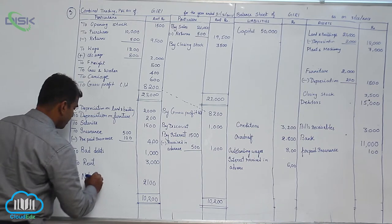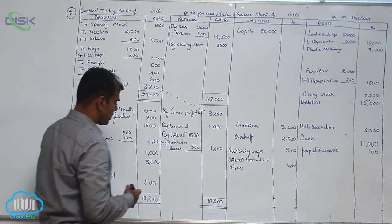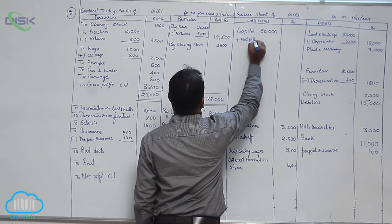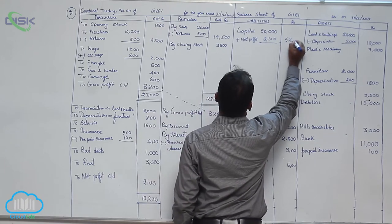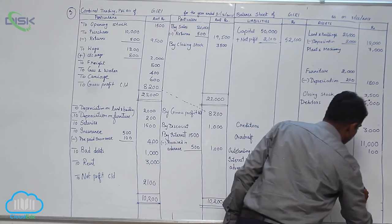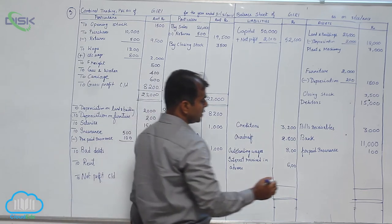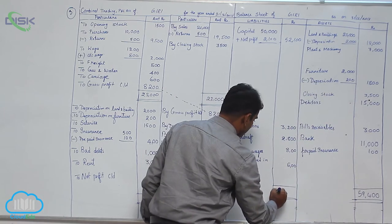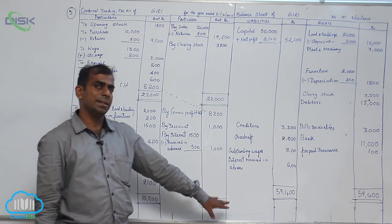So we are writing net profit carried down 2,100. You know what we should do with this net profit — we should add it to capital. So capital plus net profit 2,100, and the amount becomes 50,100. When you total both the sides, it comes to 59,400. So we have the asset side 59,400 and also your liability side coming equal to 59,400. So here the balance sheet is tallying, and this is what we say the tallying of the balance sheet.